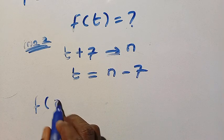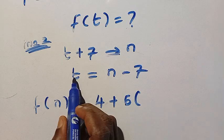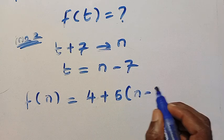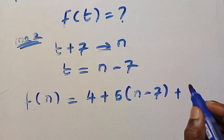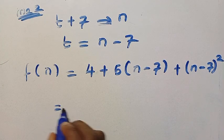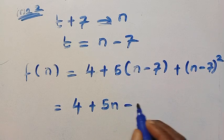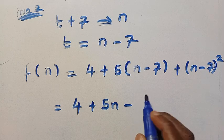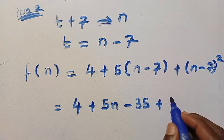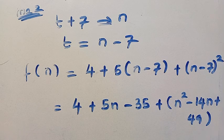As the domain has changed to n, we have f of n equals 4 plus 5 times n minus 7, plus n minus 7 squared. So we have 4 plus, expanding, 5 multiplied by n gives us 5n minus 35. Then plus, expanding n minus 7 squared, we have n squared minus 14n plus 49.